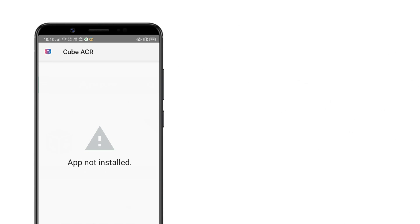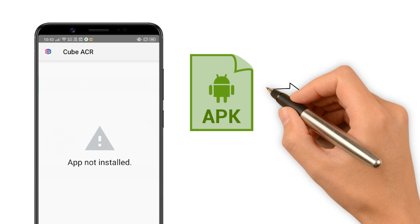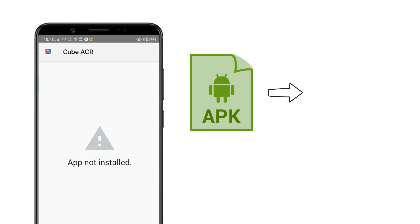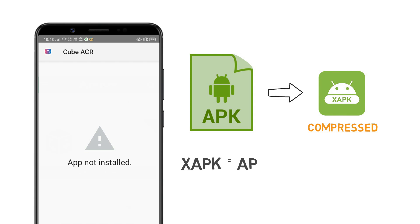xapk is a new file format that helps in compressing big apk files into a smaller size. xapk contains an apk file, obb data, cache, app icon, and miscellaneous info.